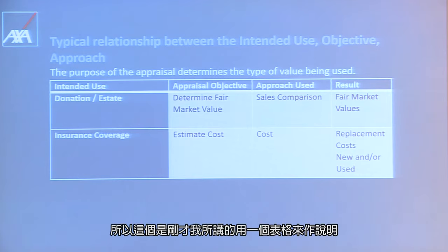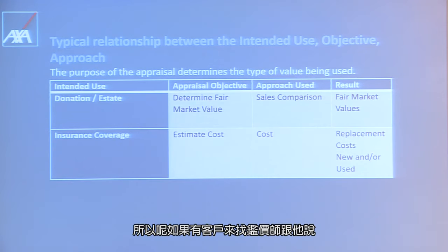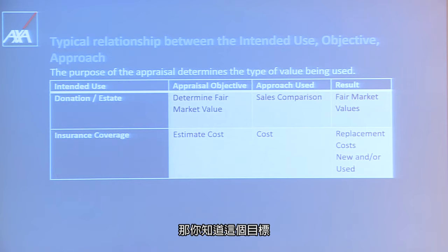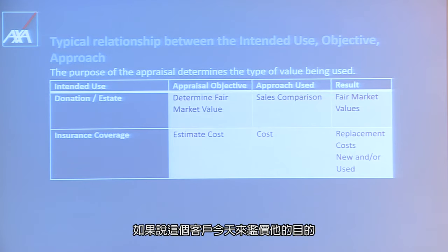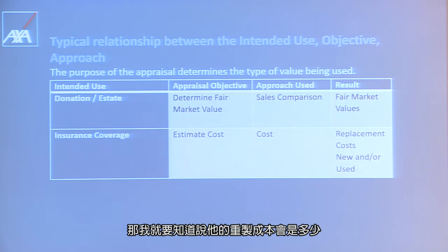This table demonstrates what was just mentioned. The appraiser finds out the client's purpose. If the client says the appraisal is for donation or estate purposes, then as an appraiser, the objective is to get the fair market value, so the sales comparison approach is used and the result will be fair market value. If the client is looking to get insurance coverage, then the estimate cost is needed, so the cost approach is used and the result is replacement cost new and/or used.